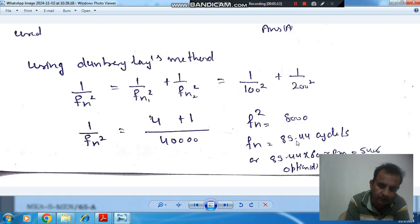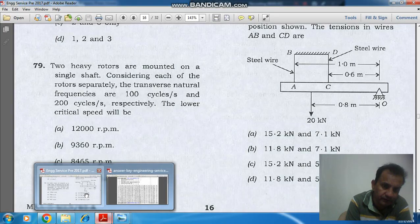From this we can get fn. So fn comes out as 89.44 cycles per second, and in rpm it will be 5406 rpm. This is the natural frequency of the combined system, and the first critical speed of the rotor should not be equal to this. So this is also the first critical speed of the rotor. The answer is option d.